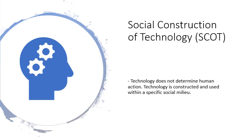Today's topic is the social construction of technology, or SCOT for short. This is a theory developed in the 1970s that posits that technology does not determine human action — it's not technological determinism. Rather, the opposite: technology is constructed and used within a specific social milieu, a specific social setting, culture, etc., and you have to understand this setting to really understand how technology operates in society.